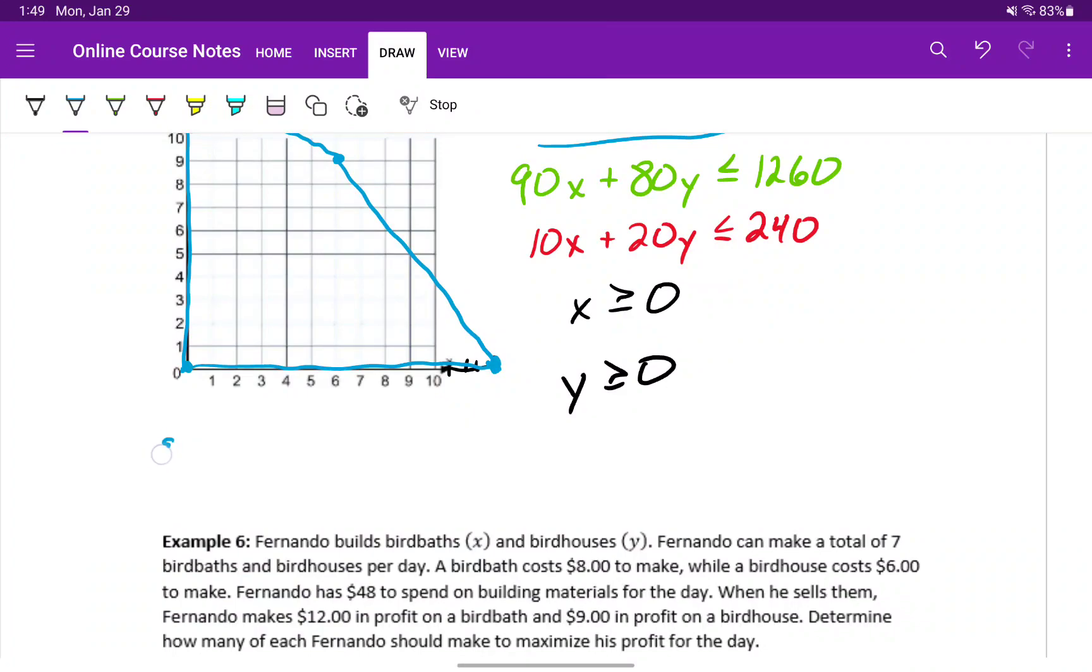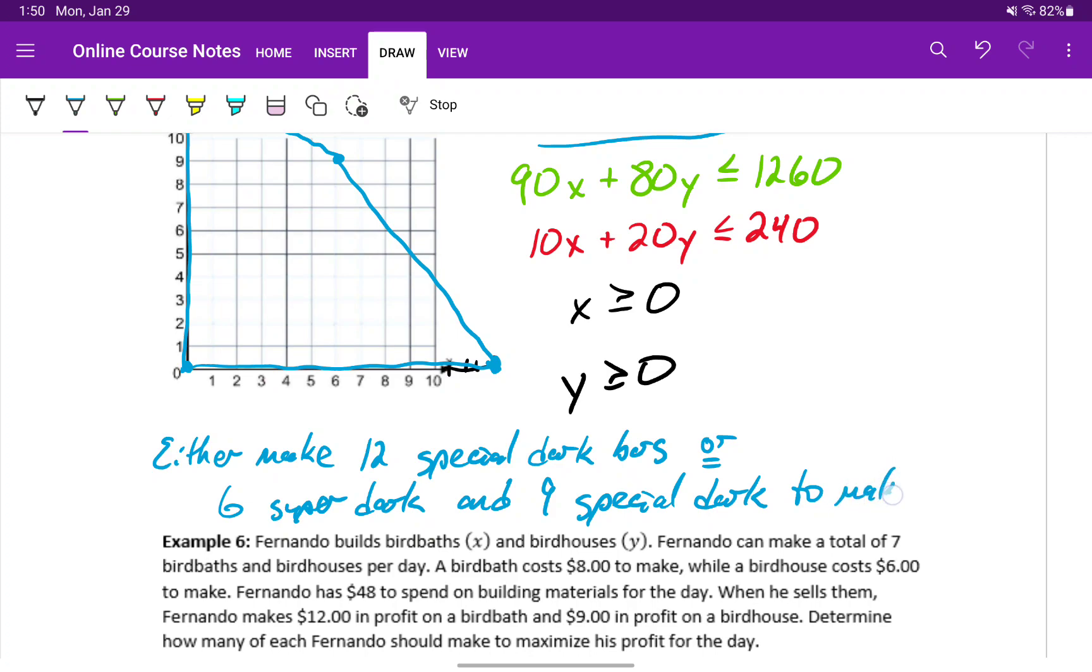So this tells us that she can either make 12 of the special dark bars and none of the other type, or 6 of the super dark, and 9 of the special dark. And in either of those two scenarios, she would make the maximum profit of $24.